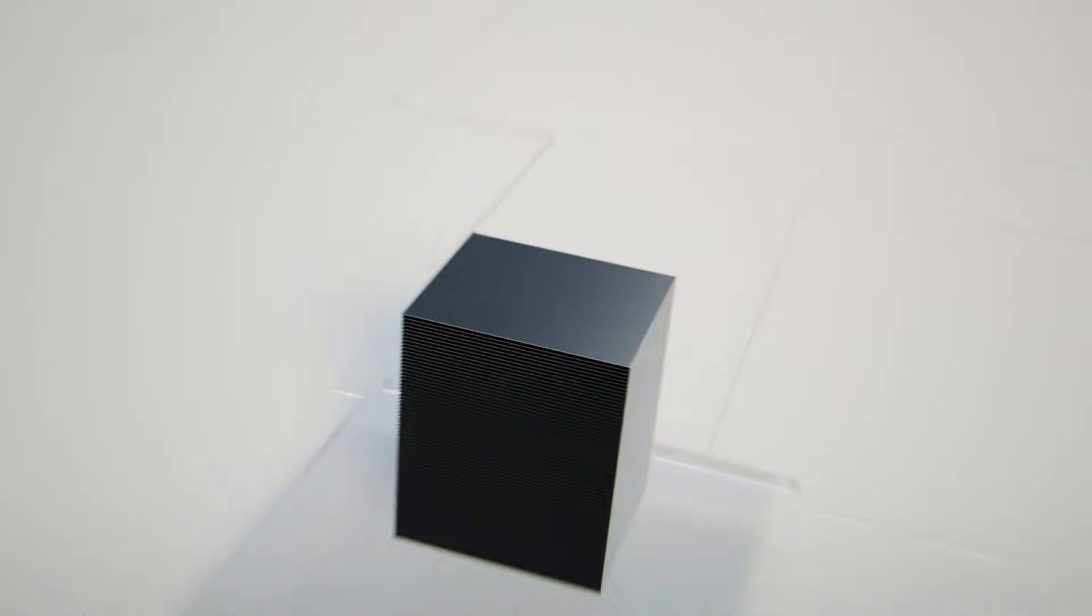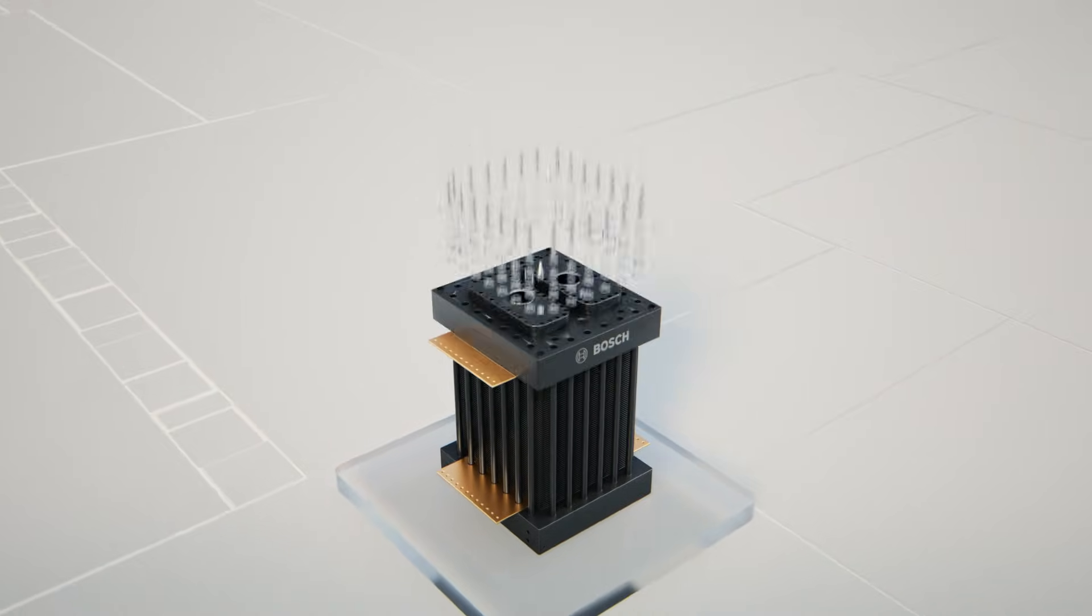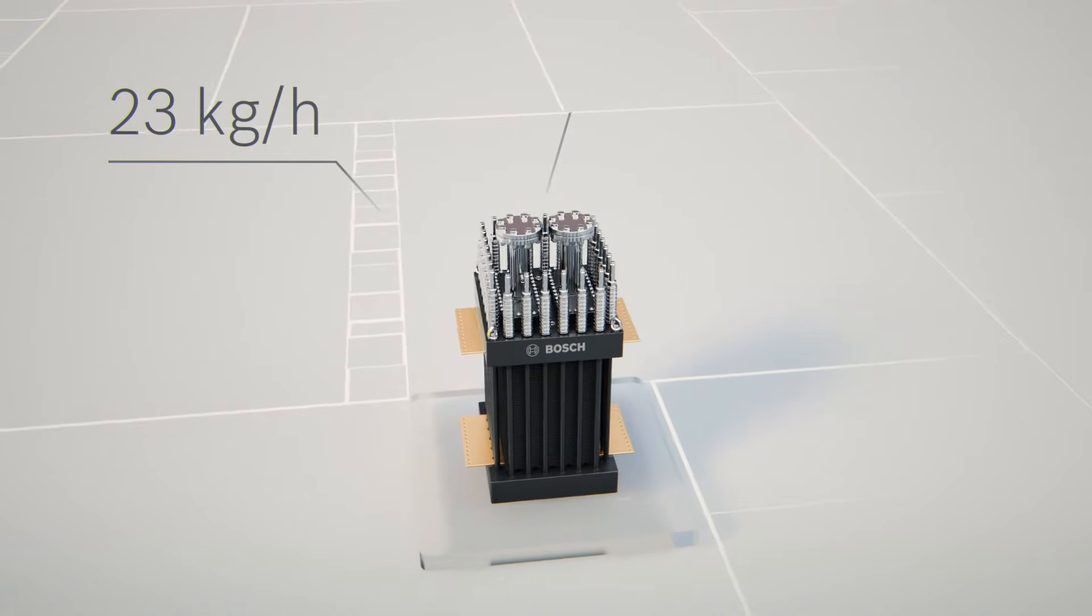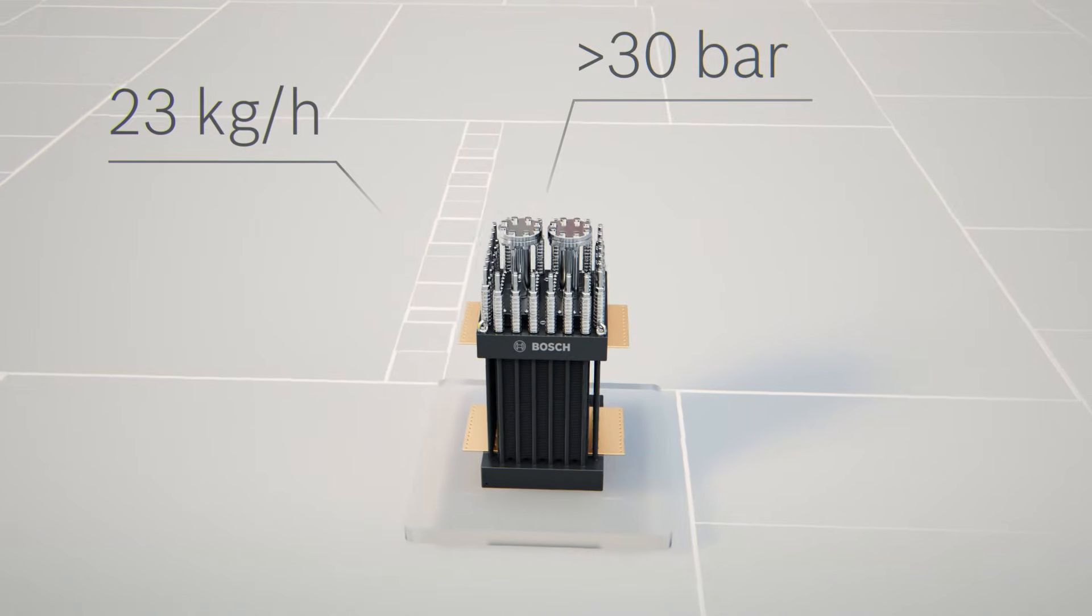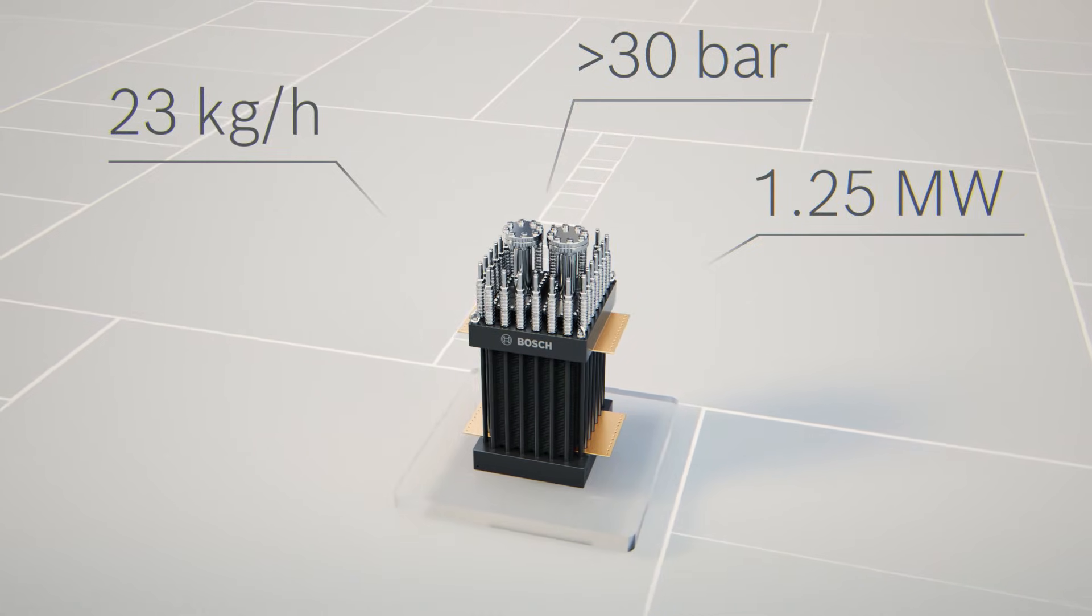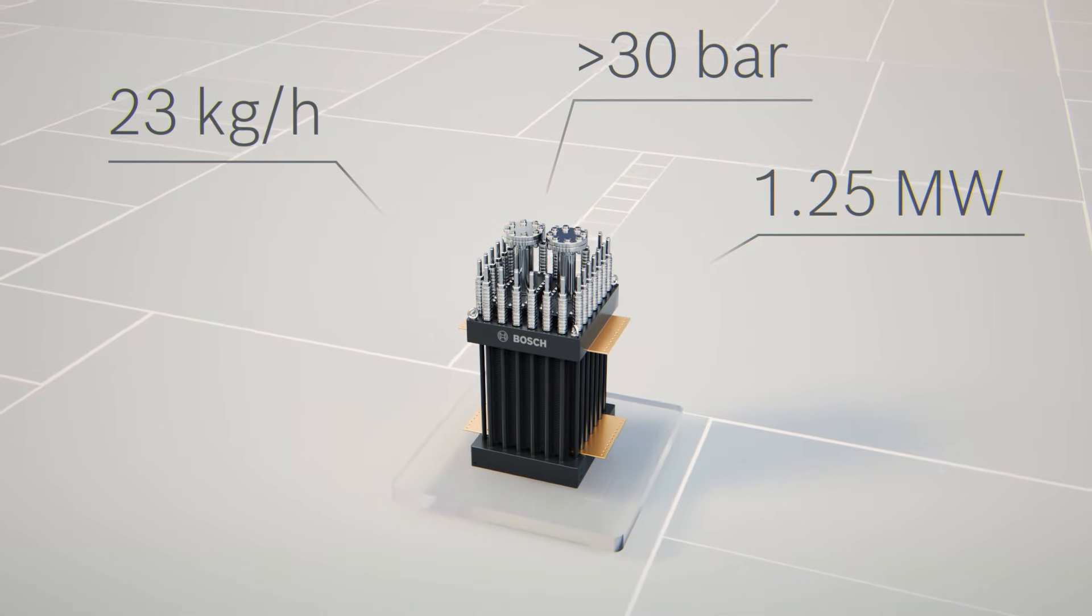The Bosch PEM electrolysis stack produces up to 23 kilograms of hydrogen per hour at a pressure of over 30 bar, which is equivalent to a power input of up to 1.25 megawatts. What a compact and highly efficient powerhouse our stack is.